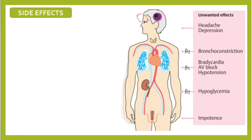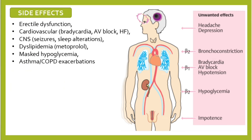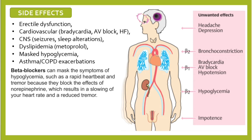Now let's look at the side effects of beta blockers. These include erectile dysfunction; in the cardiovascular system: bradycardia, AV block, worsening heart failure; in the central nervous system: seizures and sleep alterations; dyslipidemia, particularly with metoprolol. Beta blockers can also mask the symptoms of hypoglycemia — such as rapid heartbeat and tremor — because they block the effects of norepinephrine, reducing heart rate and tremor. This is called hypoglycemia unawareness.